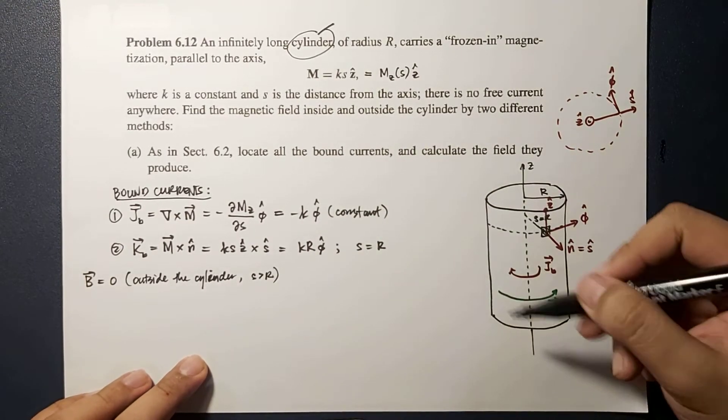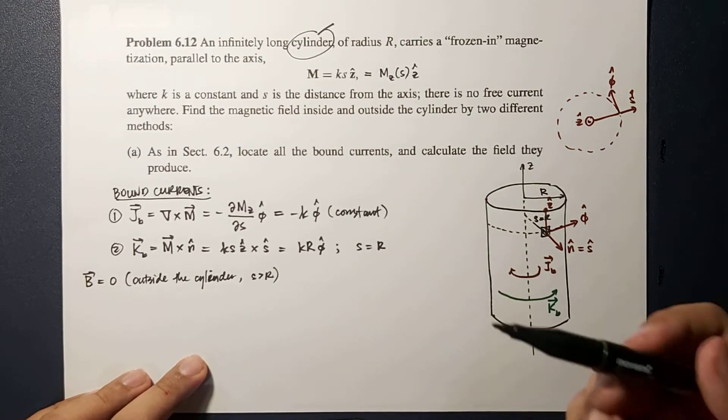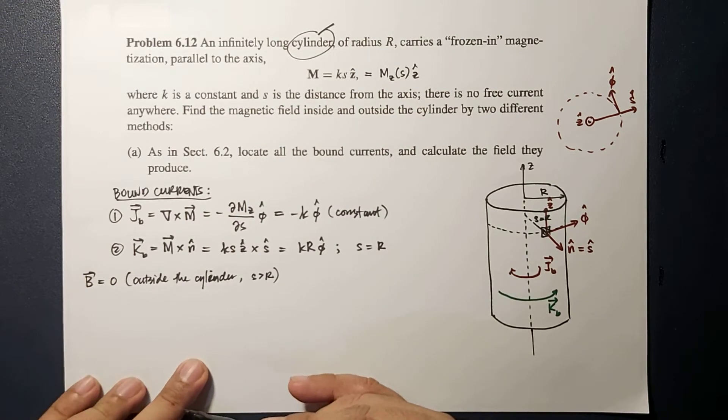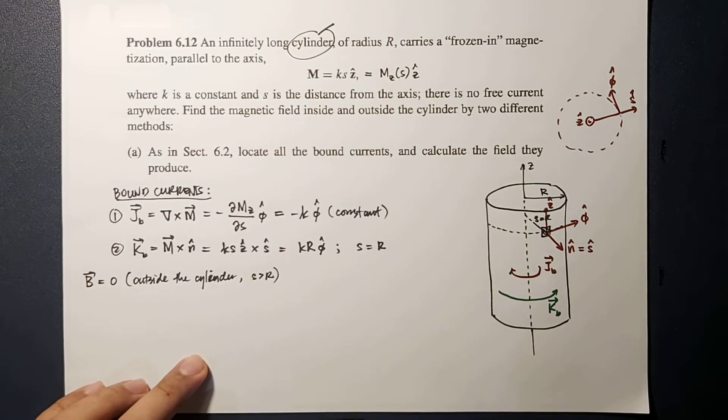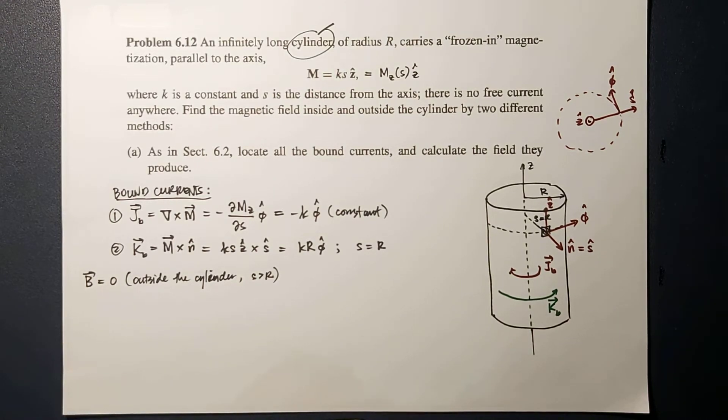Now that means the resulting magnetic field produced by this cylinder will only be located inside the cylinder. So in order to do that, let's use Ampere's law.